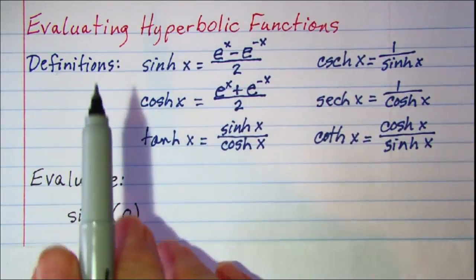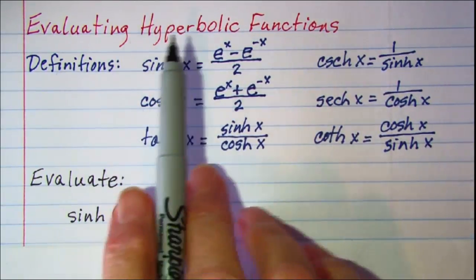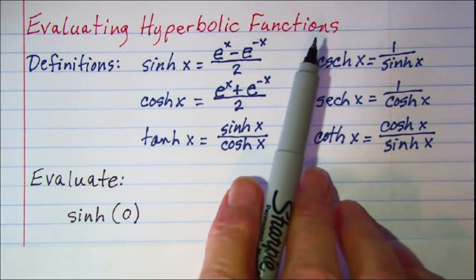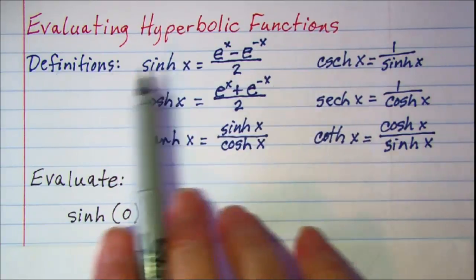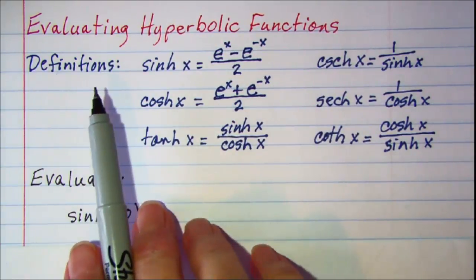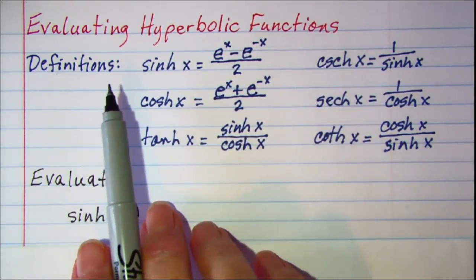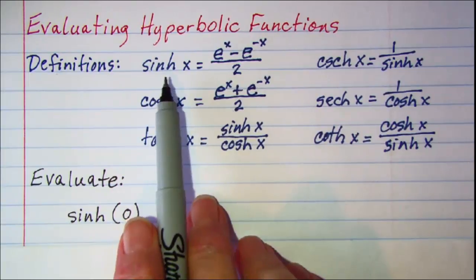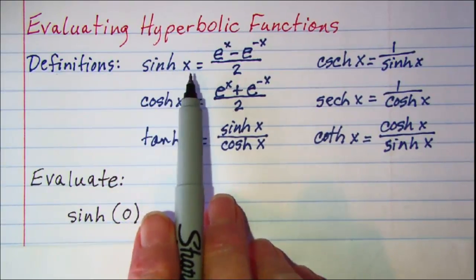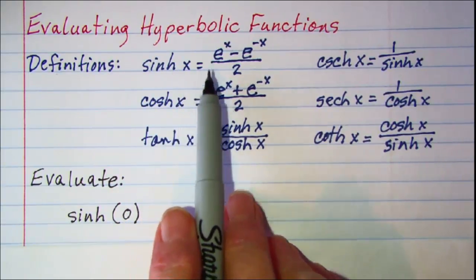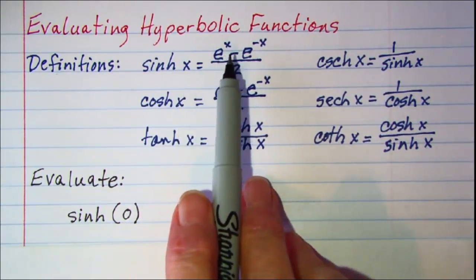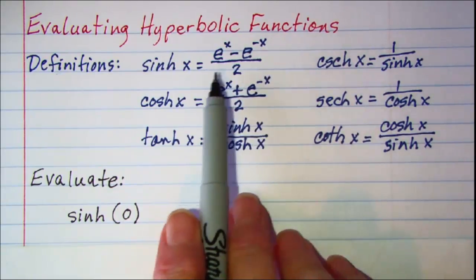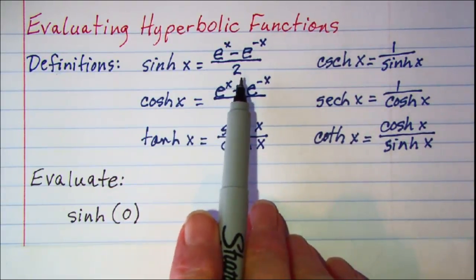In this video we will be evaluating hyperbolic trig functions. The definitions of our hyperbolic functions: the hyperbolic sine of x is equal to e to the x minus e to the negative x, all divided by 2.